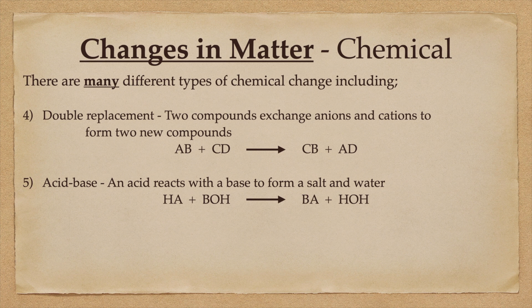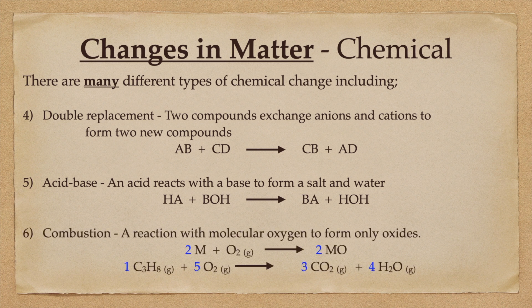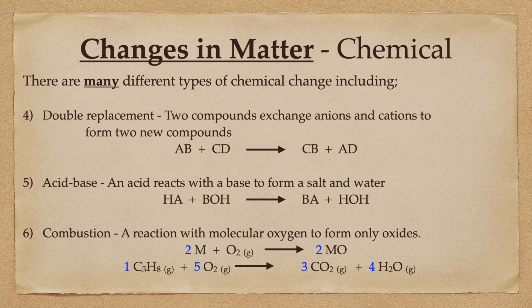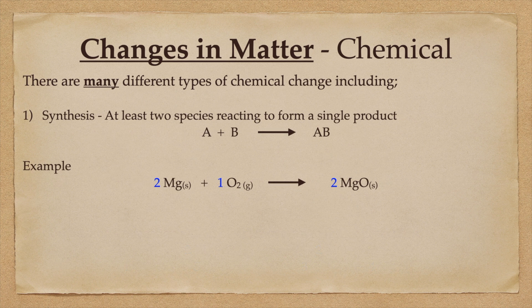The sixth category is combustion, and that's a reaction with molecular oxygen to form only oxides as products. It can be metallic combustion to make a metal oxide. Or another example would be a hydrocarbon combustion, where something like propane reacts with oxygen to produce carbon dioxide and water. Let's look at a few examples of those six categories.